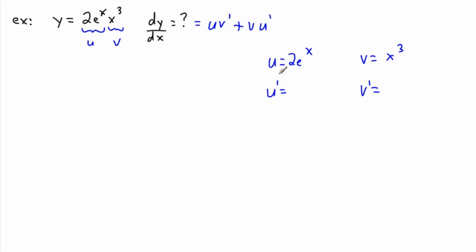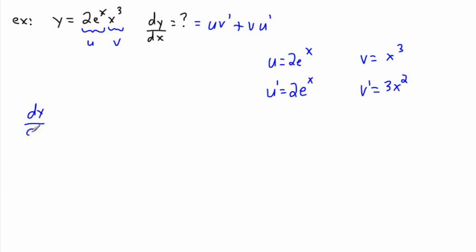Now let's find the derivatives. The derivative of 2eˣ: the derivative of eˣ is just eˣ, so the 2 hangs out and u-prime is just 2eˣ. For v equals x³, we use the power rule — bring the exponent in front: 3 times x to the power of 3 minus 1, so v-prime equals 3x².